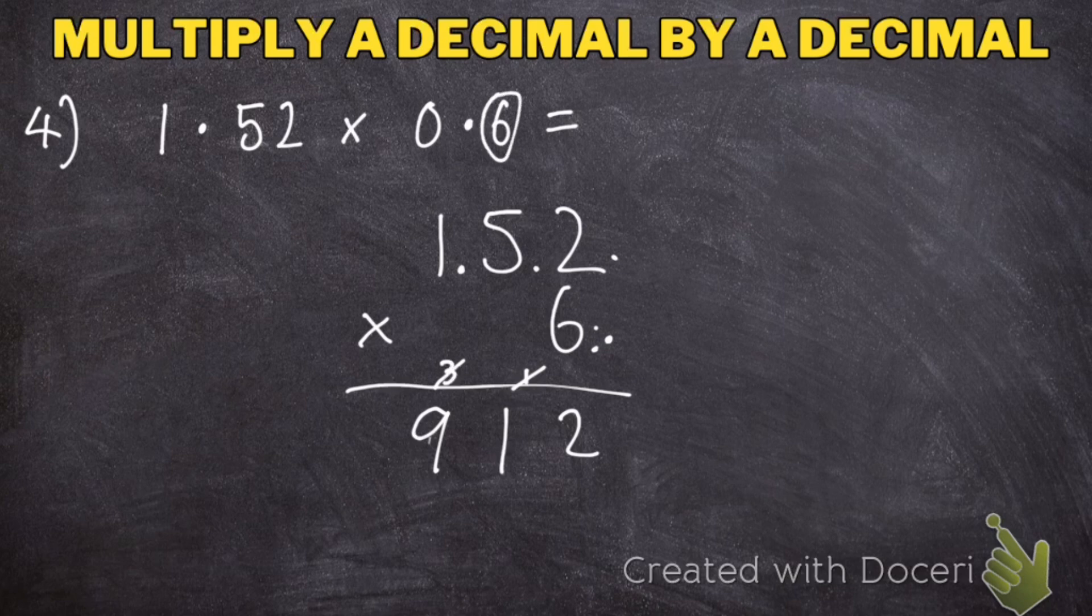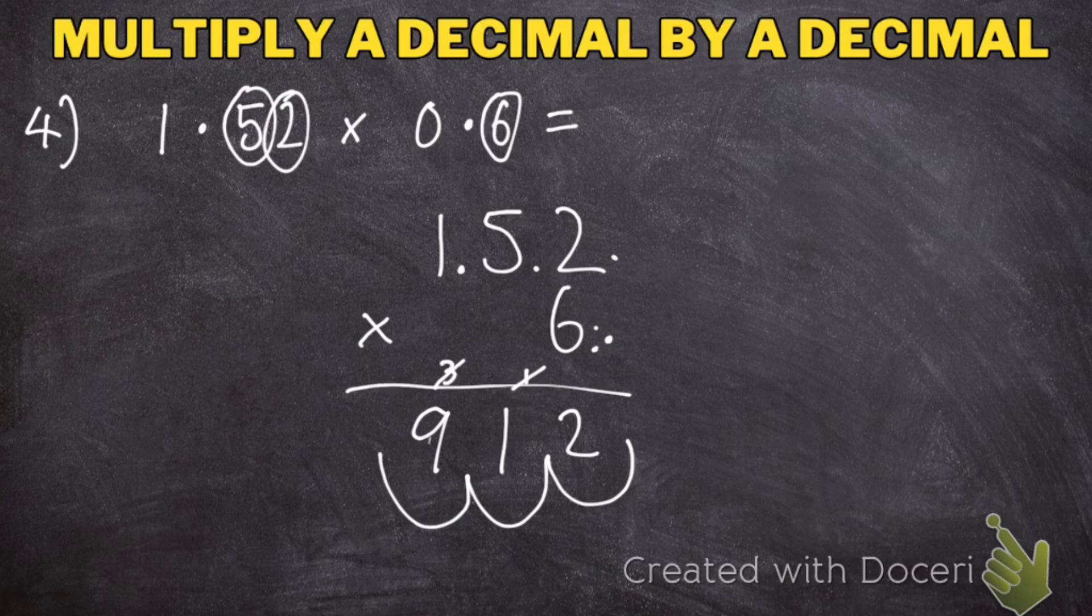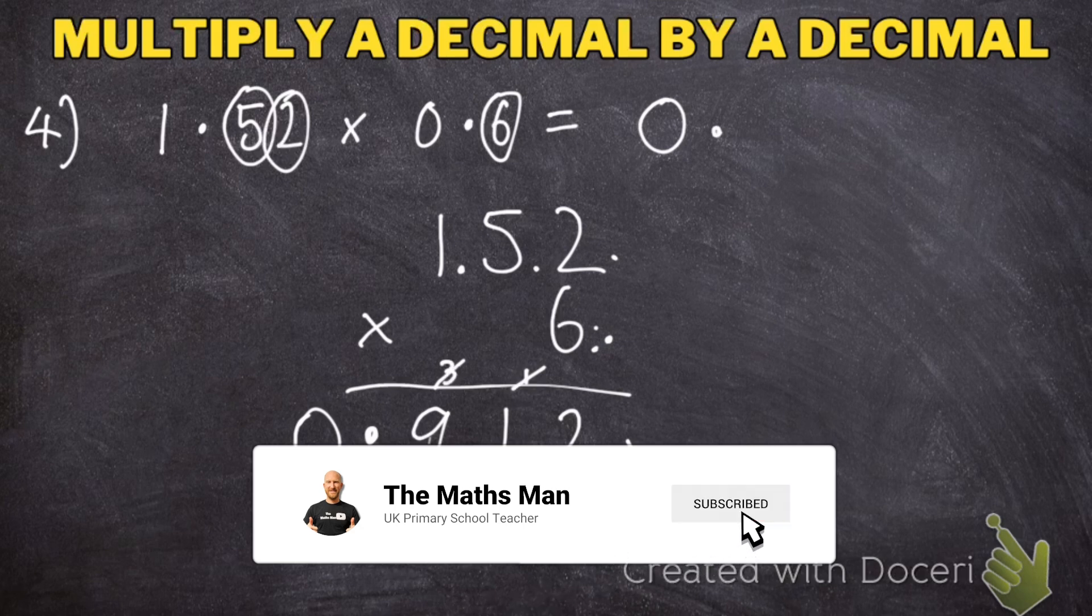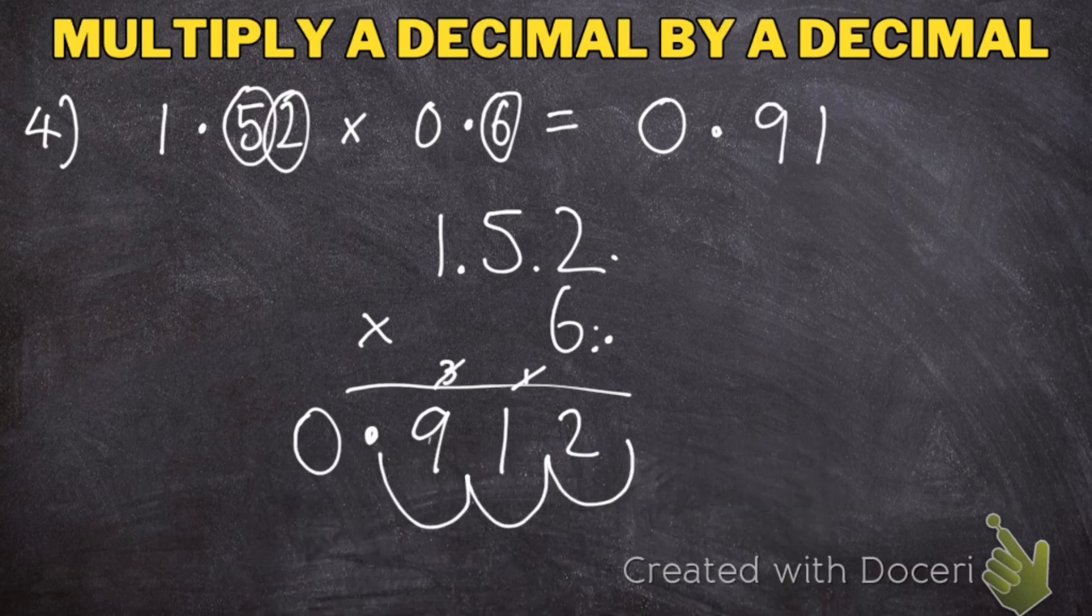I've got 1 decimal place, 2, 3 decimal places. So I'm going to go 1, 2, 3, put my decimal point there, and a 0. My final answer is 0.912.